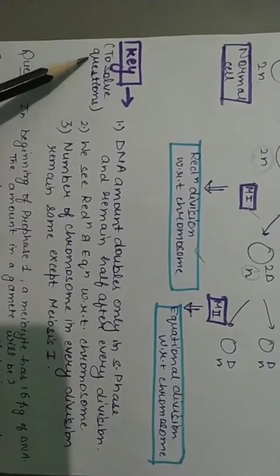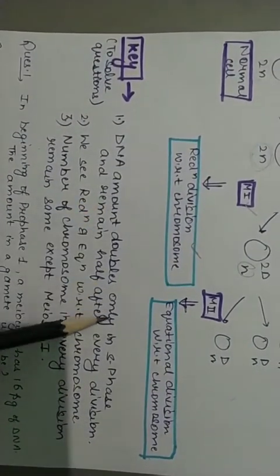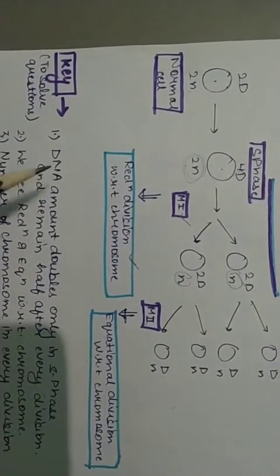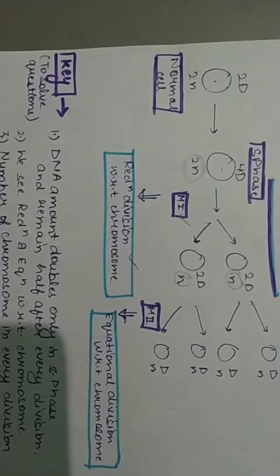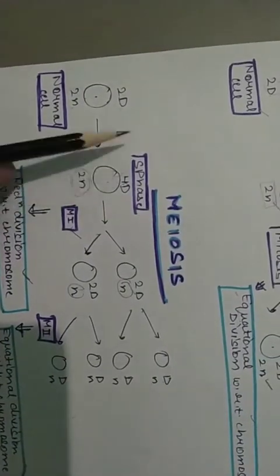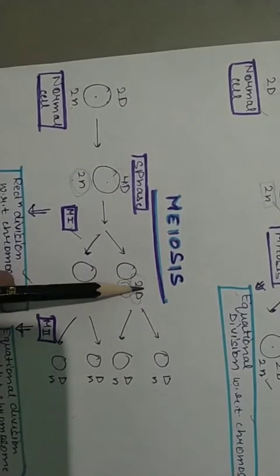DNA amount double only in S phase and remain half after every division. Jo DNA ka amount hai, woh double sirf S phase ke andar ja ke hoga. Aur baaki har division ke andar yeh half ho jayega. Like yaha pe S phase ke andar double ho gaya, baaki har division ke andar half hota gaya. Yaha 4d se 2d, 2d se d. Thik hai.